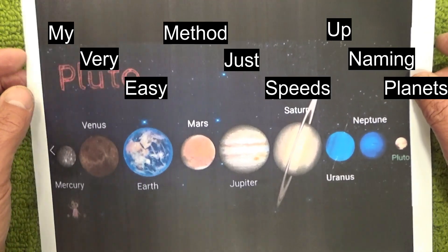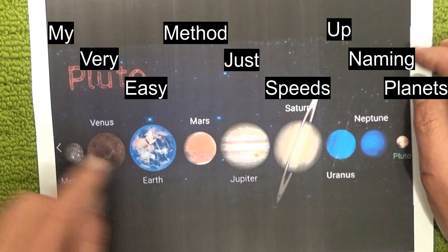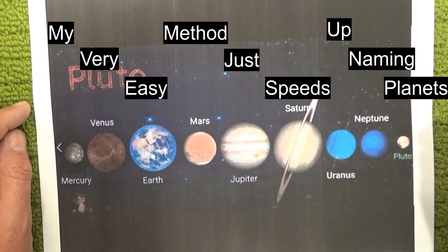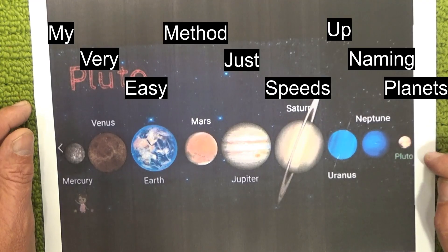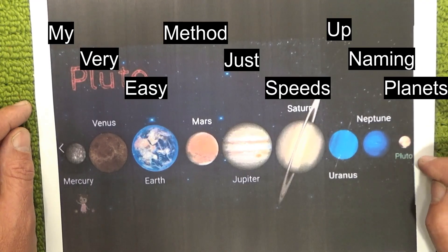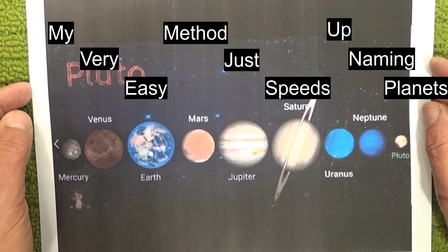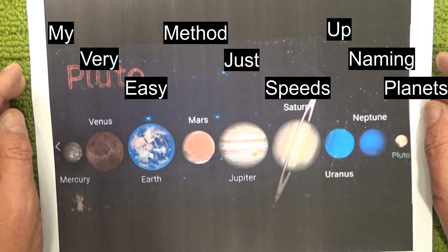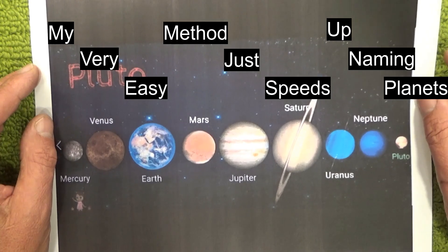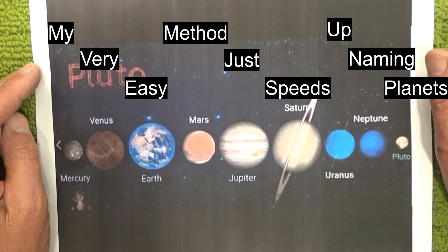So that's a simple mnemonic that will help you remember the order of the planets. Just noting that generally now Pluto is not considered a planet, but it fits nicely into this mnemonic so I've kept it in for this video. Hope you've enjoyed the video — thanks for watching and goodbye for now.